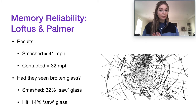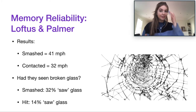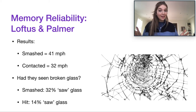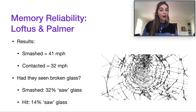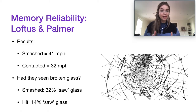A follow-up study by Loftus and Zanni adds reliability to the original findings. A year later they asked participants 'Did you see the broken headlight?' versus 'Did you see a broken headlight?' — using the same car crash premise. Based on the original results we'd expect the definite article to lead more participants to report seeing a headlight, and that's exactly what they found: only 7% said they saw 'a broken headlight' whereas 17% said they saw 'the broken headlight.' This confirms we are incredibly susceptible to the phrasing of sentences and leading questions.